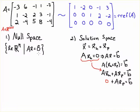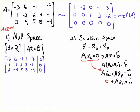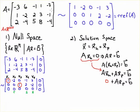The null space contributes to the infinite number of solutions when they exist, and there is an intimate relationship between the null space and the solution space — their dimensions are the same. To find the null space, we set up Ax = 0 and look for a non-trivial homogeneous solution. I'll row reduce the system using the RREF already computed, where the pivot columns correspond to x1 and x3.